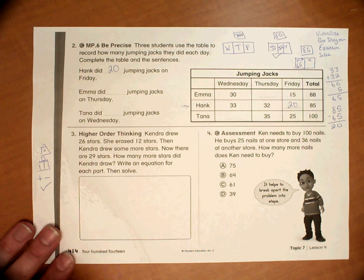This is a little picture of a camera. That stands for visualize. That's step one. Picture of a bar diagram. That's step two. Plus and minus. That stands for equation. And then the check is to solve. So those are the same four steps that we've been using.